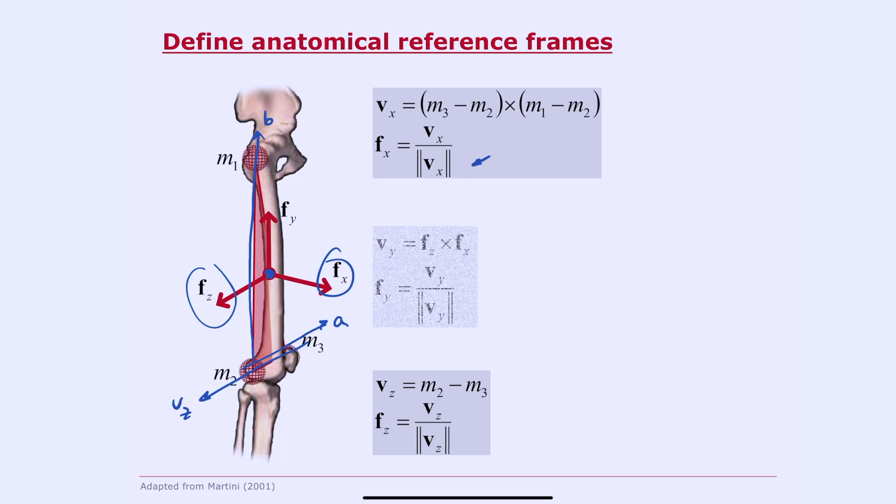Finally, to define a right-handed coordinate system, we can simply take the cross product of Fz and Fx to get Fy. And you'll notice we've normalized here again. Despite the fact that we think Fz and Fx are both of unit length, it's a good idea to normalize anyway in the event that there's some numerical noise.